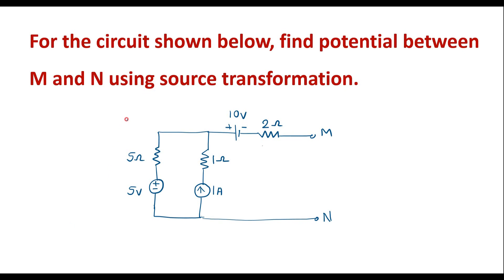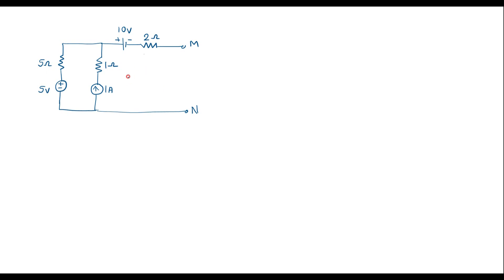In this video I will consider one numerical on source transformation. For the circuit shown below, find the potential between M and N using source transformation. This is the given circuit. We are supposed to find the voltage between M and N, that is the potential between M and N using source transformation.